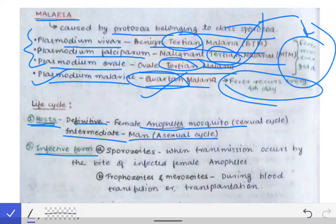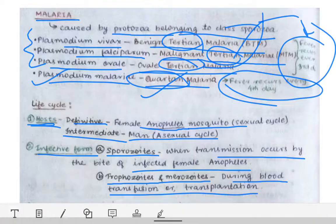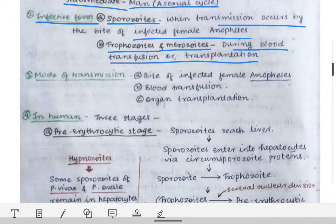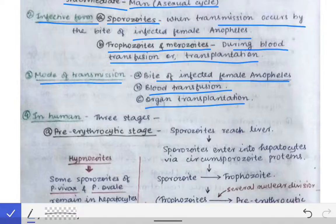The infective form varies depending on the mode of transmission. Sporozoites are the infective form when transmission occurs by the bite of an infected female Anopheles mosquito. However, the infective form is trophozoites and merozoites when transmission occurs during blood transfusion or organ transplantation. The modes of transmission of malaria are: the bite of an infected female Anopheles, blood transfusion, and organ transplantation.